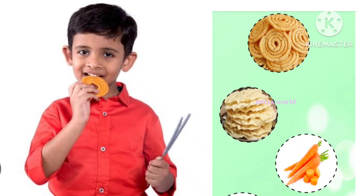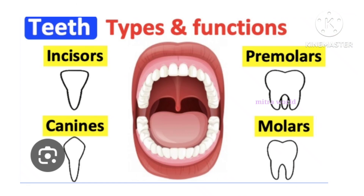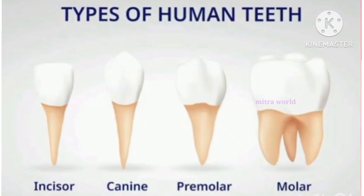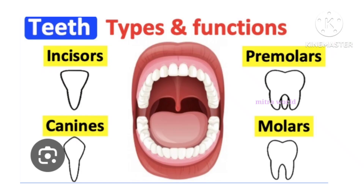Karuku muruku crush. We have incisors and canines, premolars and molars. There are four types of teeth. And they are permanent teeth.